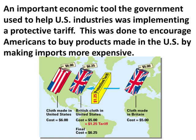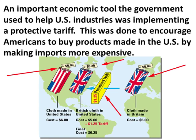This illustration shows how a protective tariff works. Let's say in Britain you can produce and sell roller cloth for $5, while the same quality cloth in the United States sells for $6. The British cloth is cheaper — but if you put a protective tariff in place and add $1.25 to its cost, by the time it reaches U.S. markets it's $6.25 compared to the $6 domestic cloth. When consumers go to the store, they'll hopefully buy the cheaper cloth, which in this case is the cloth made in the United States.